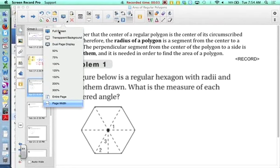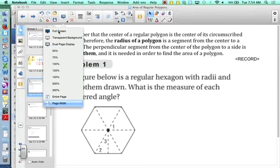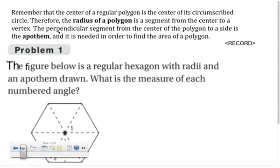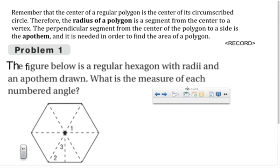So far we have dealt with finding areas of parallelograms, triangles, trapezoids, kites, and rhombi. Today we're talking about regular polygons. Before we get into that though, there's a little bit of vocabulary that I need to make sure that we're clear on.